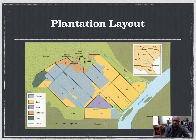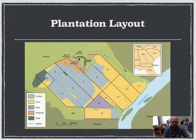Most slave plantations were closely related to river systems. You had to have water to irrigate the crops, and also for transportation — all this cotton and other goods had to be transported to major ports. The best way to do that was not by roads but by waterways. So you see most plantations budding up against some type of river, if possible.